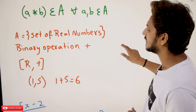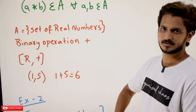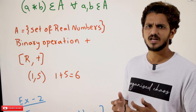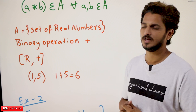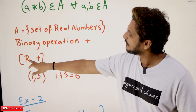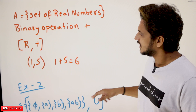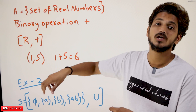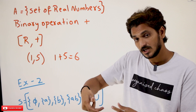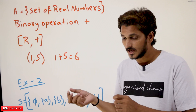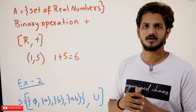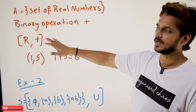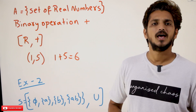With an example you will get a better understanding. Let's take the set of all real numbers and the binary operation plus. You take any real numbers — integers, fractions, all those values — and apply the binary operation plus. For example, take 1 and 5 from the real numbers. Apply 1 plus 5, the output is 6. 6 belongs to real numbers. For any two real numbers, if you add them, the output is going to be in the real numbers. So it is satisfying the closure property, and we call this an algebraic structure.